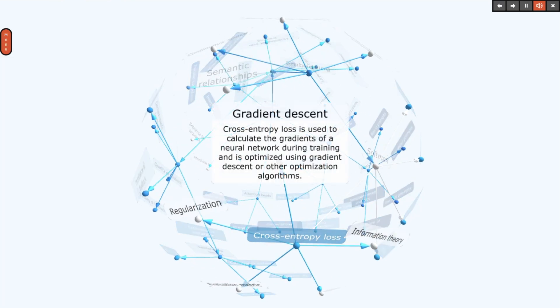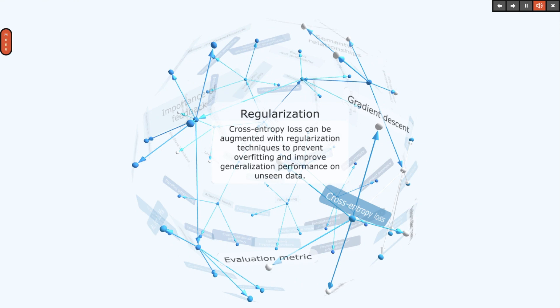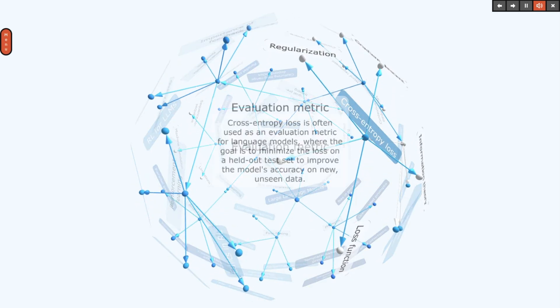Cross-entropy loss is used to calculate the gradients of a neural network during training and is optimized using gradient descent or other optimization algorithms. It is often used as an evaluation metric for language models, where the goal is to minimize the loss on a held-out test set to improve the model's accuracy on new, unseen data.